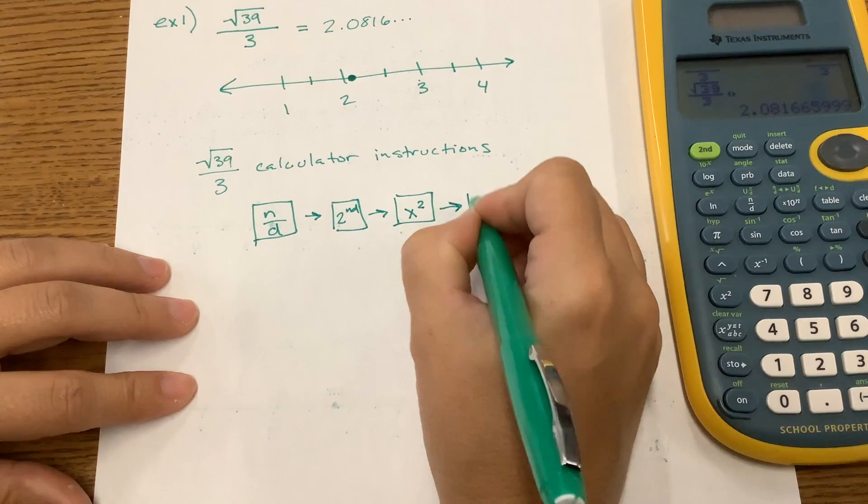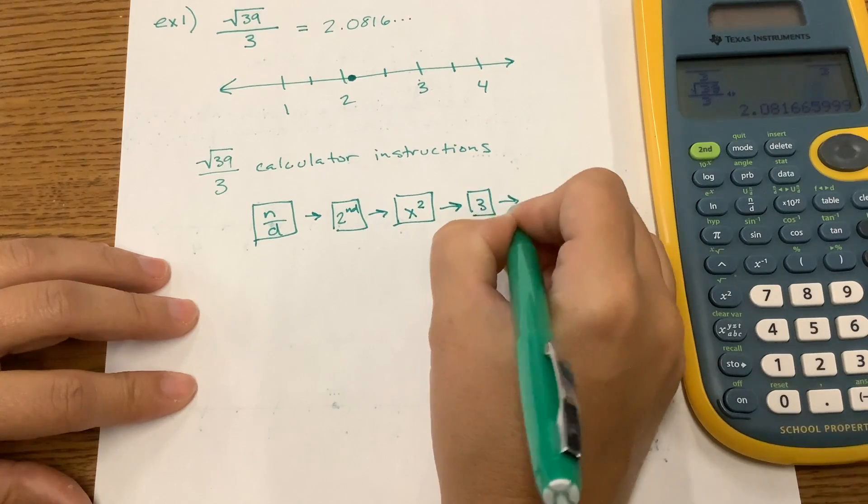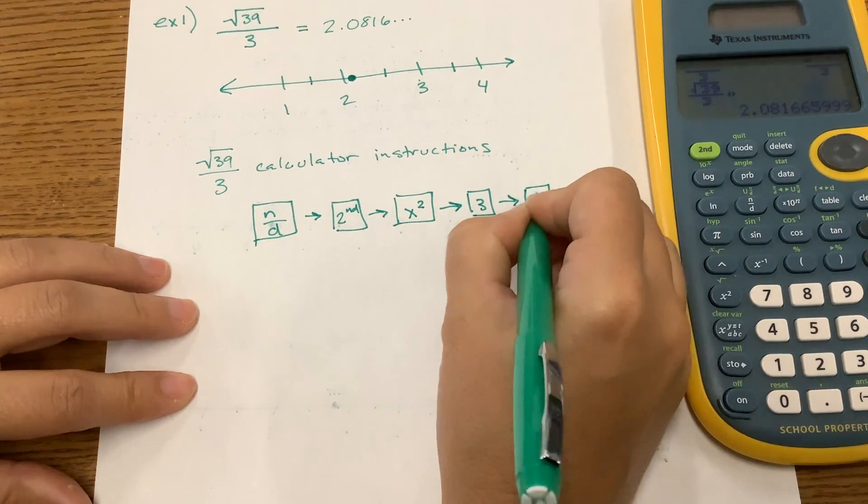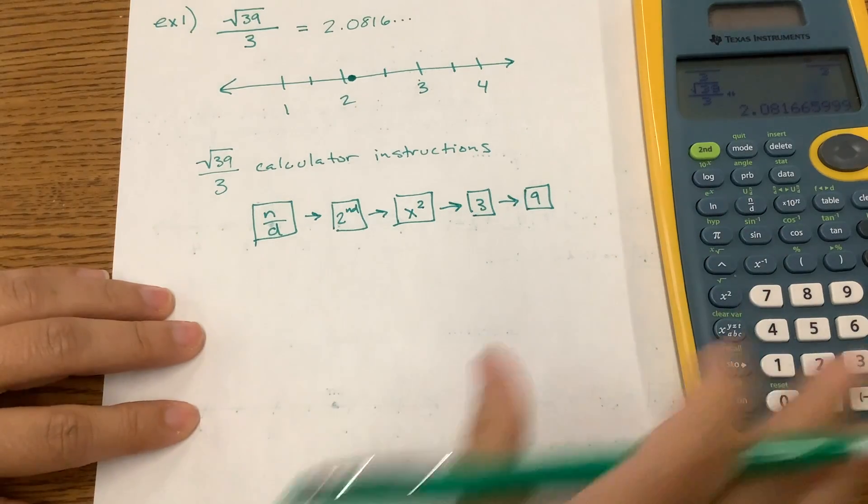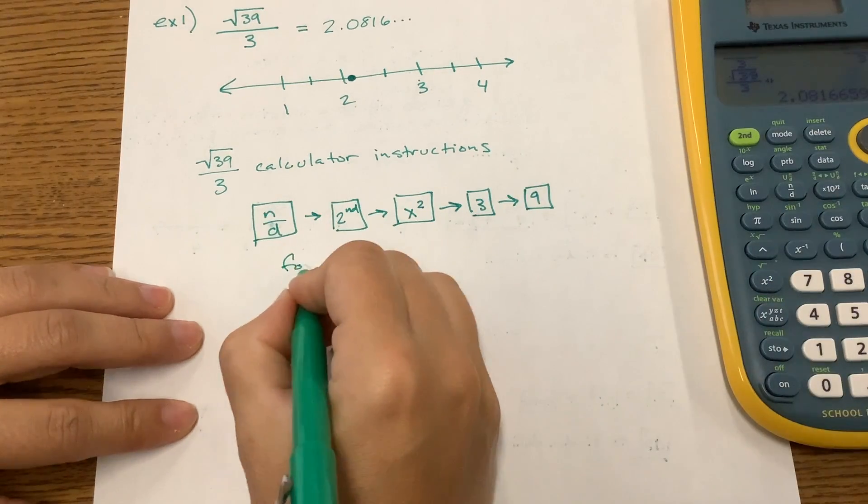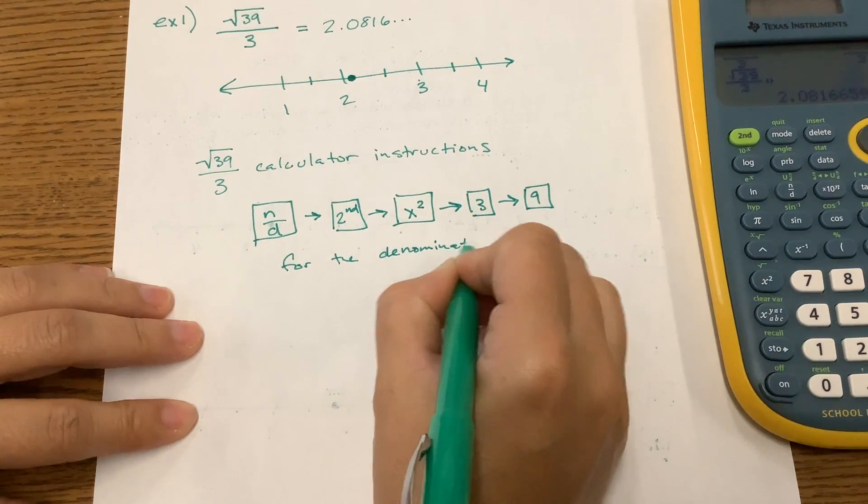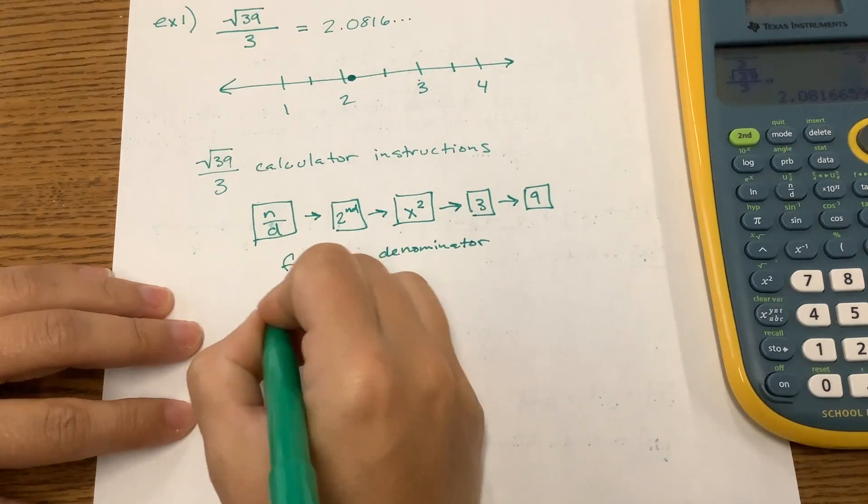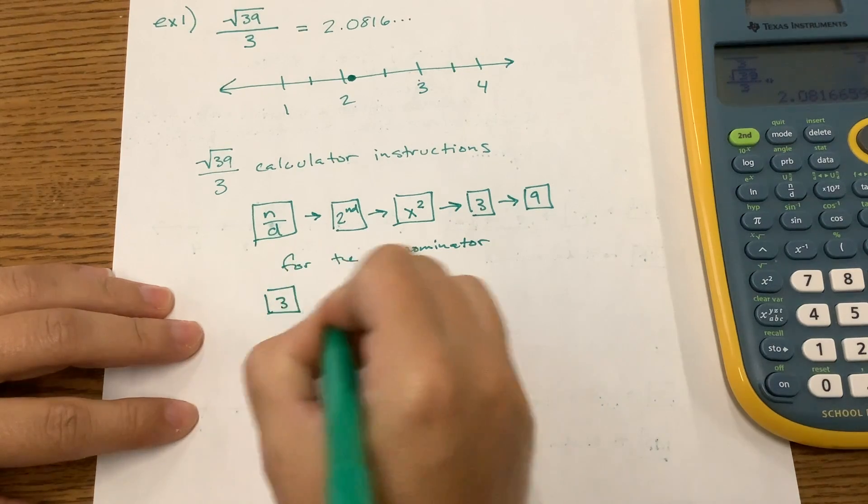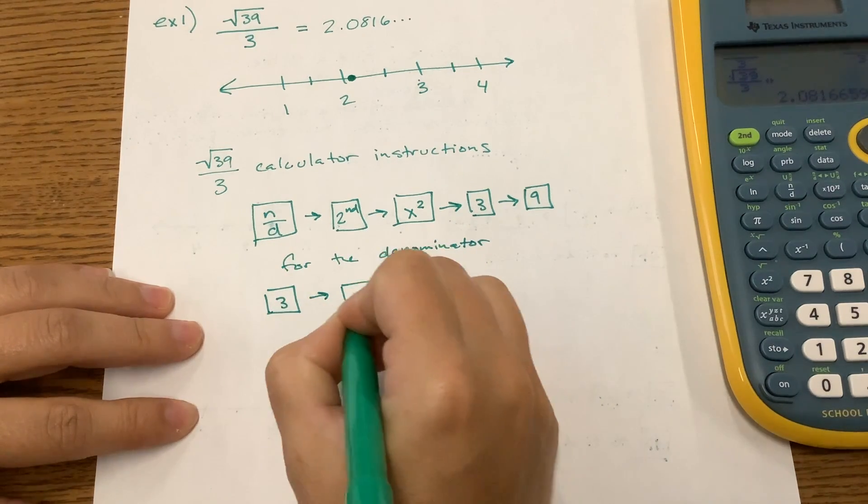Then we put in the 39 by 3 and 9. Then for the denominator, we simply put in the 3, and then we pressed enter to evaluate.